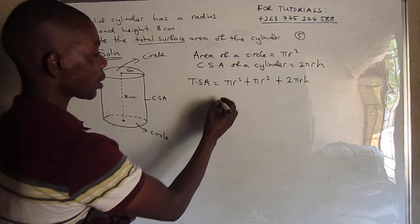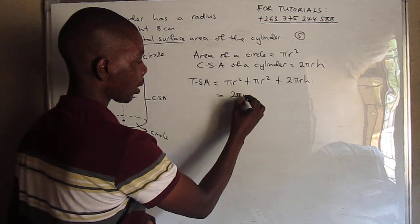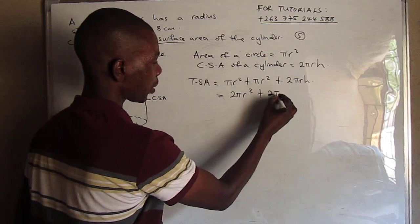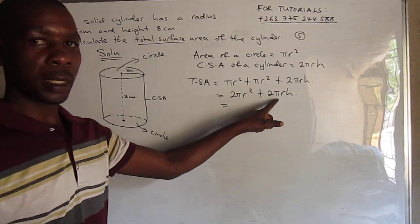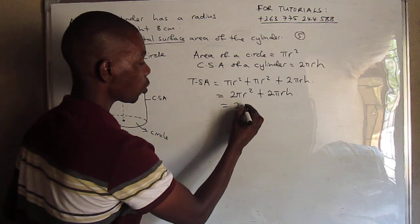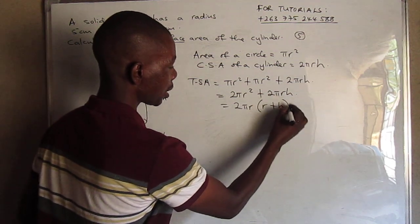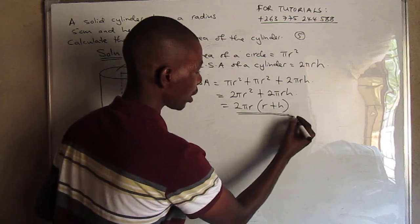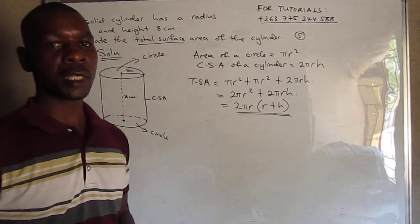So in this case we can add these two. We have 2πr² plus 2πrh. Then we can factor out 2πr, here it will be r plus h. So this is the general formula to find the total surface area of a cylinder.